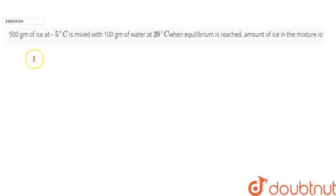What is the question I have given? 500 grams of ice at minus 5 degrees Celsius is mixed with 100 grams of water at 20 degrees Celsius. When equilibrium is reached, amount of ice in the mixture is.